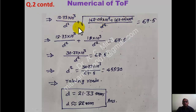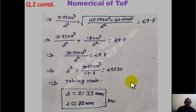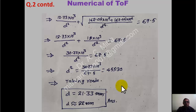Setting sigma 1 equal to the allowable stress 67.5 MPa, squaring both sides and simplifying: 30.73 × 10³ / D² = 67.5. Solving: D² = 455.3, giving D = 21.33 mm, approximately 22 mm. The difference from Problem 1 is that here Ft and Fs are given, so we first find sigma and tau, then use the simplified sigma 1 formula to find D.